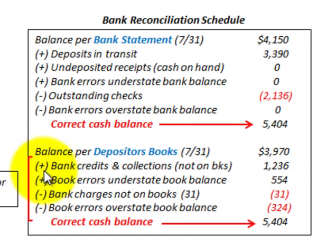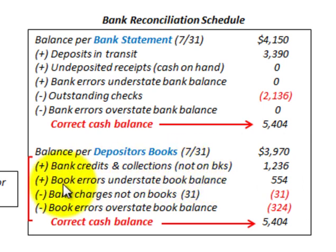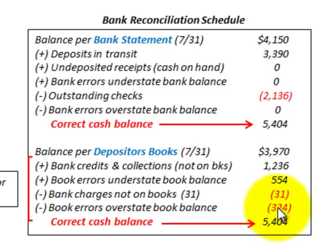Looking at the balance per the depositor's books, we start with the beginning cash balance. We add back any bank credits and collections not recorded on the books — in this case $1,236 for a note or loan collected by the bank on behalf of the company. We also add back book errors that understate the book balance, here $554. Then we subtract any bank charges not on the books — $3,100 in this case — and subtract book errors that overstate the book balance, here $324.